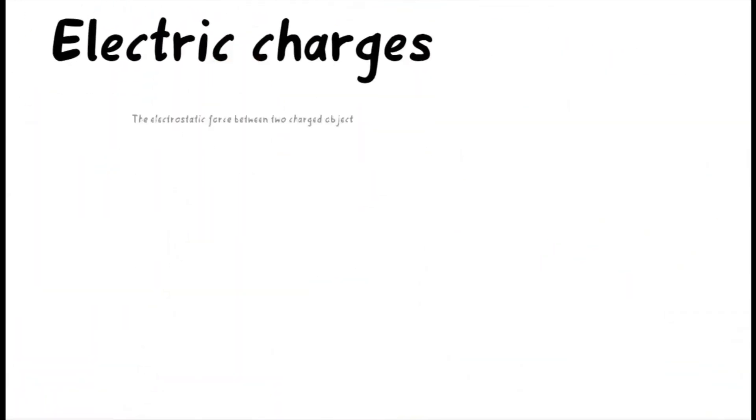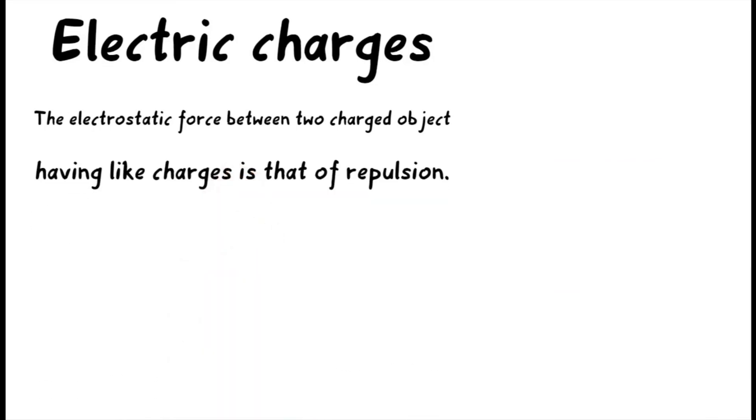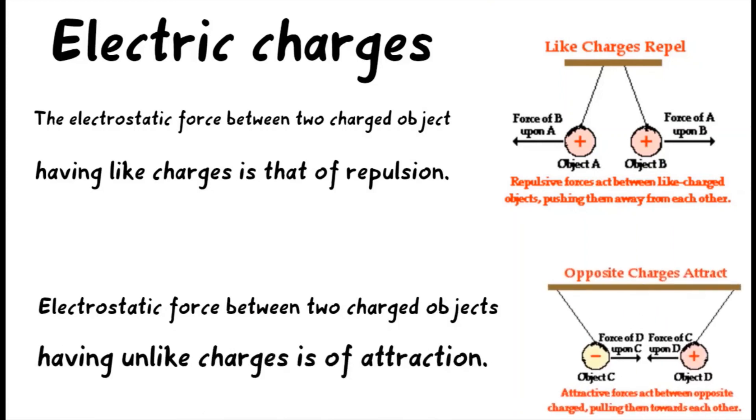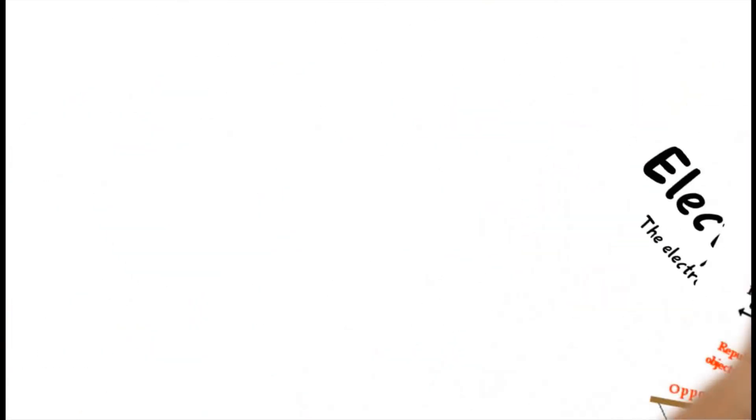Electric charges, there are two types of electric charges, positive charge and negative charge. And the electrostatic force between two charged objects having like charges is that of repulsion. It means like charges repel each other. And electrostatic force between two charged objects having unlike charges is of attraction. It means unlike charges attract each other.